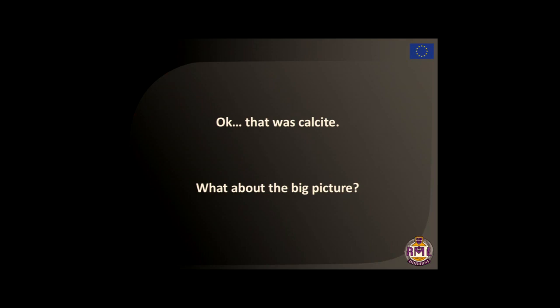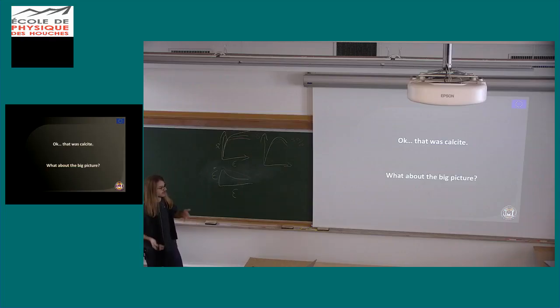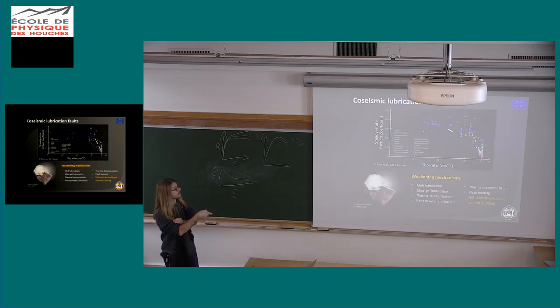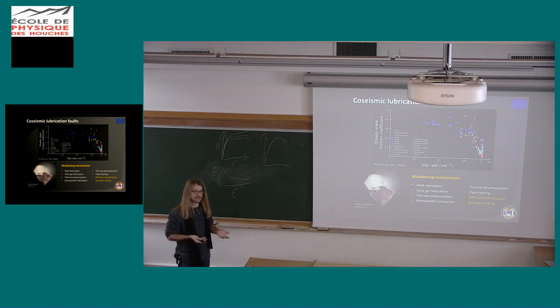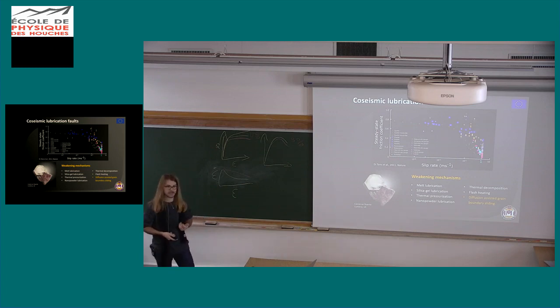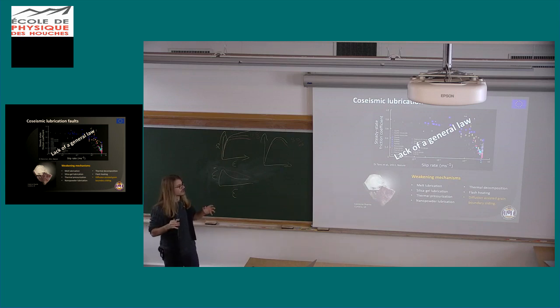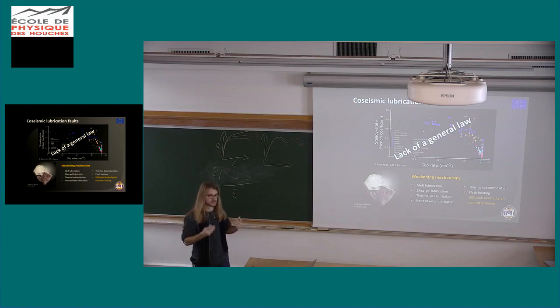Okay. This was calcite. I tried to convince you that this is actually a mylonite even at very high strain rates, something that has not been realized before. But calcite is just one material. Can we expand it to other materials? Because as we have seen from the previous presentation, this works for a wide range of materials and they seem to have the same evolution despite having different weakening mechanisms that are material dependent. Let's try to unify a little bit. So lack of a general is a little bit bold, but probably what I want to do here is to unify and try to see if materials respond the same way.